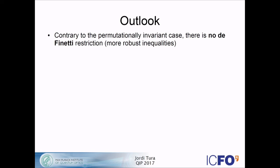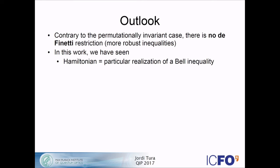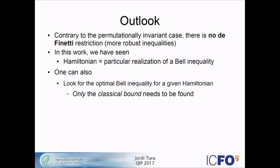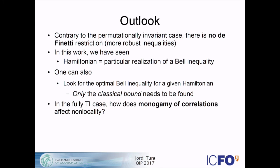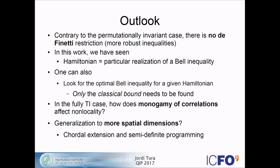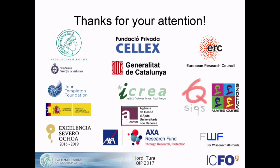Open problems and comments: contrary to the permutational invariant case, we expect the inequalities here to be more robust to noise because there is no definite restriction. One can also reverse the whole approach and look for the optimal Bell inequality for a given Hamiltonian — since the ground state energy is fixed, you only need to change the coefficients of your Bell inequality and look for what gives the largest gap. The relation between monogamy of correlations in the fully translational invariant case is still unclear. One can also generalize to more spatial dimensions using semi-definite programming techniques, and study persistence of non-locality — how many parties you have to remove from a system to still have these correlations. Thank you for your attention.